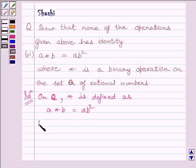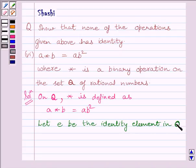Now, let e be the identity element in Q. Then a star e must equal a must equal e star a for every a belonging to Q, where Q is the set of rational numbers.